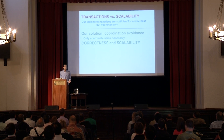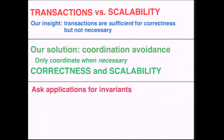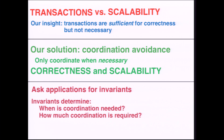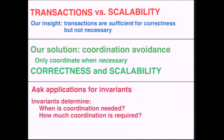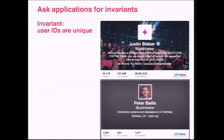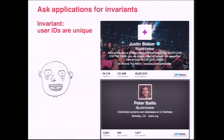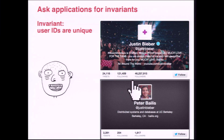The secret behind how we decide when it's required to coordinate is that we'll ask applications for a specification — what we'll call invariants — that describe valid states of the application. These invariants will determine when coordination is needed and how much. As an example, if we're on twitter.com, we might want the invariant that user IDs are unique, such that Justin Bieber has one ID and I have a different ID. If we had the same ID, a user comes along and tries to follow Justin but might end up following me instead — this is a bad user experience.